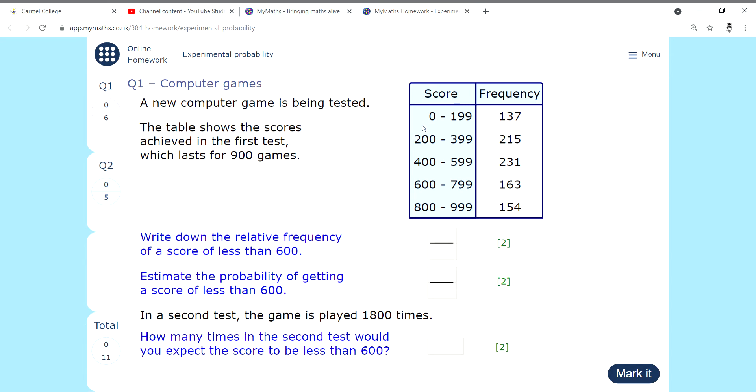Reading the question, a new computer game is being tested. The table shows the scores achieved in the first test in which there were 900 games. We need to write down the frequency of a score less than 600. The score less than 600 includes these three numbers here - the frequencies for 0 to 199, 200 to 399, and 400 to 599. The score of 600 happens here, so less than 600 is these ones.